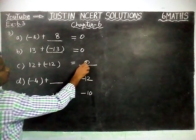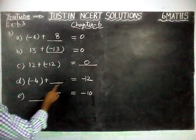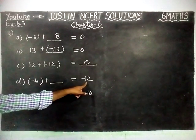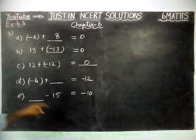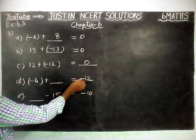Next, D question: minus 4 plus dash equals minus 12. Here, we need minus 12 as the answer. We need minus 12. Here, left-hand side we have minus 4. Dash equals minus 12.